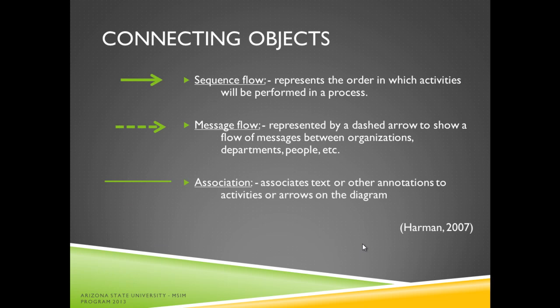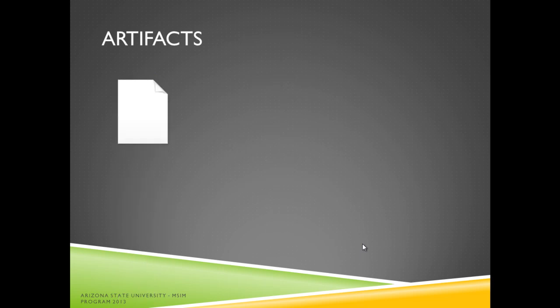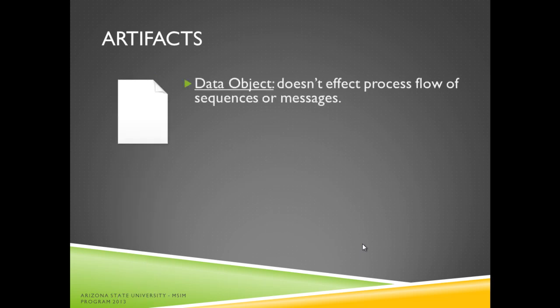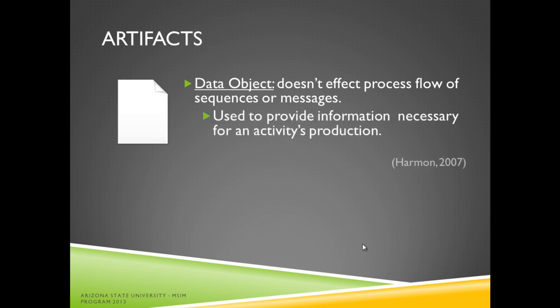A line represents an association, which associates text or other annotations to activities or arrows on the diagram. A data object is considered an artifact because it doesn't affect the process flow of sequences or messages. It is typically used to provide information necessary for an activity's production.